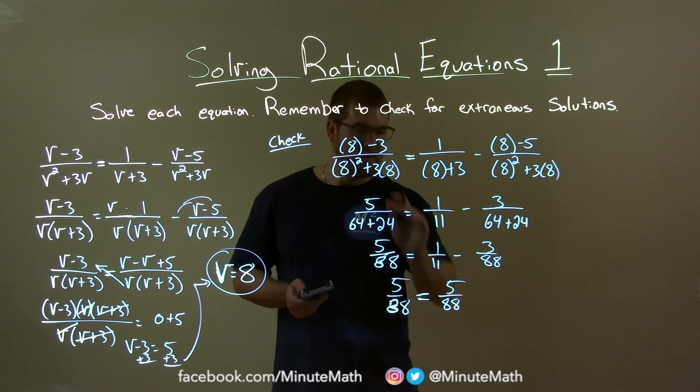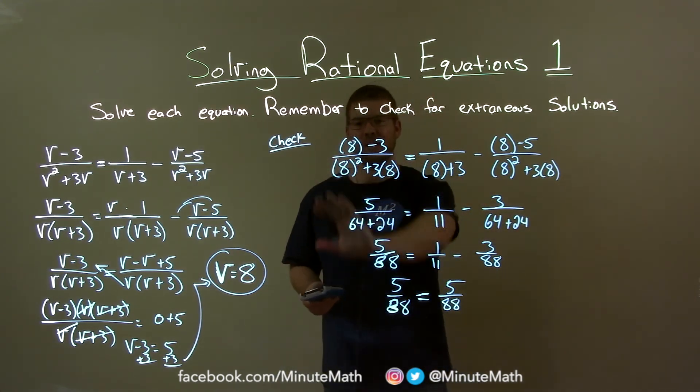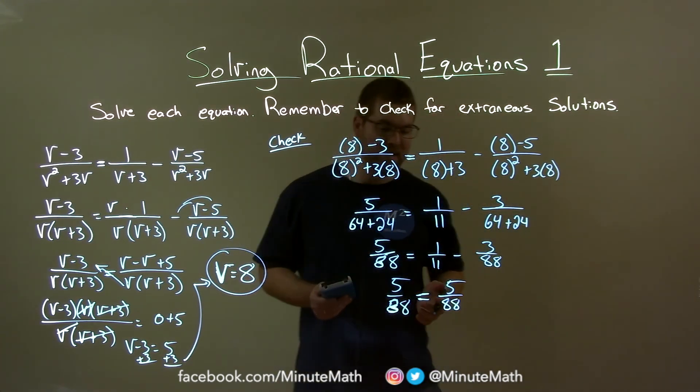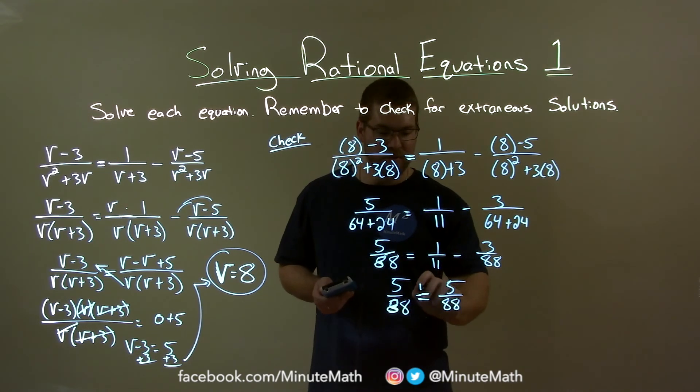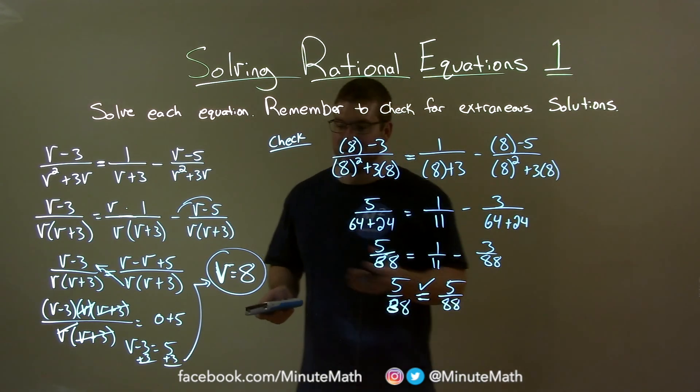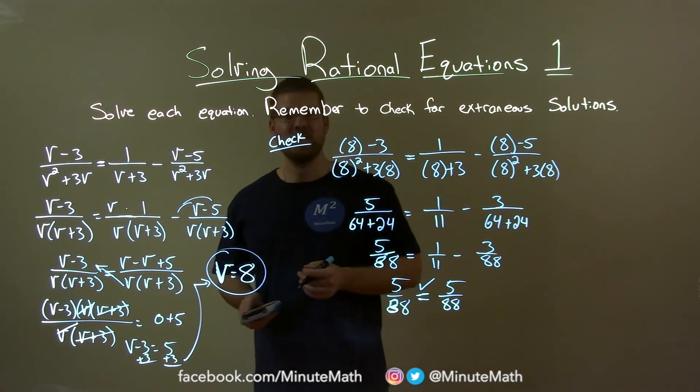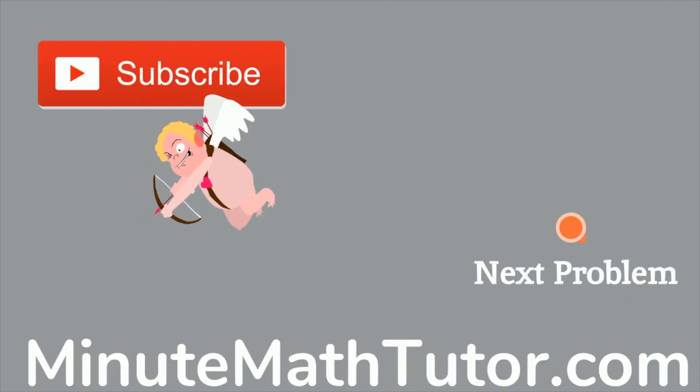So either way, always kind of double check. Don't just erase everything right away if you make mistakes. We all can make mistakes. Left and right hand side though are equal, meaning that our answer was true. And our final answer is just v equals 8. Minute math, minute math, when you need help, you use minute math.